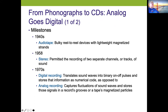In the 1940s we had audio tape — real reel-to-reel devices with magnetized strands. In 1958 stereo came about, giving us two separate channels or tracks of sound. Now we have 16 or 32 tracks — a crazy amount compared to what we had in 1958.